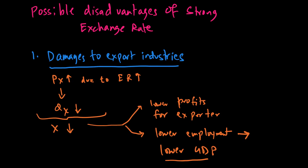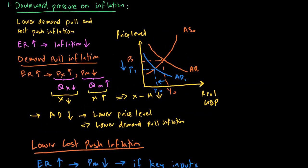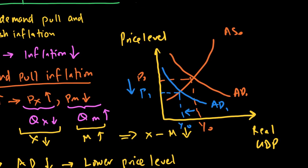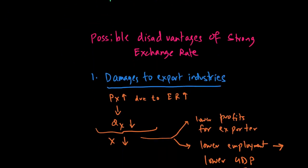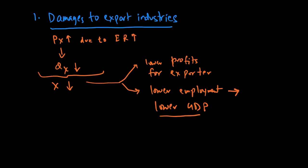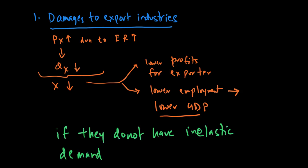Going back to the diagram, when X minus M goes down, AD falls but GDP also falls. The GDP fall means that not only does inflation fall, but there is also lower GDP and therefore lower employment levels for the country. The export industry will significantly take a hit from a strong exchange rate if they do not have inelastic demand — because if they have inelastic demand, export expenditure may go up. But assuming demand for goods is elastic, export expenditure will fall.